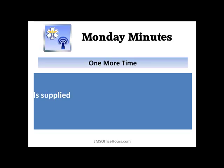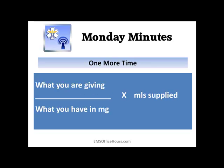Here's that formula one more time: get what you're giving — sometimes you'll need to convert using milligrams per kilogram first — divide that by what you have in your vial in milligrams, then multiply by the milliliters supplied, and you'll get your answer. All you have to do is multiply and divide. You can do that on paper if your calculator breaks down or you lose your cell phone. Since a lot of these calculations are for pediatrics, you want to be sure you're accurate.